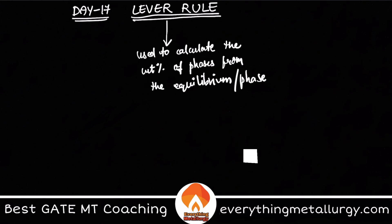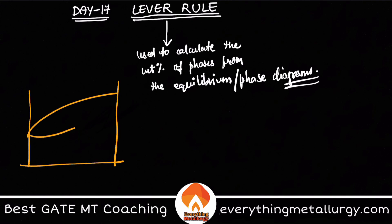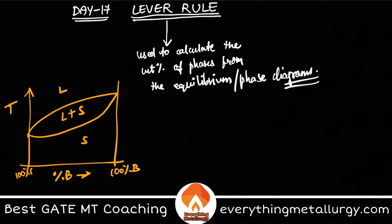Let me take an isomorphous diagram — isomorphous means it has complete solubility. So let's say I have this particular diagram where I have liquid on top, solid below, and obviously a two-phase region of liquid plus solid. This is temperature on the vertical axis, and let's say we have a binary alloy with percentage B on the horizontal axis. 100% B on one end and 100% A (or 0% B) on the other.